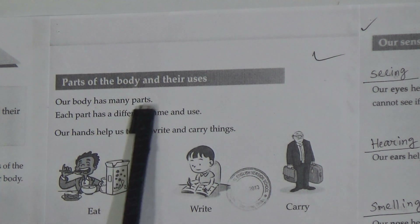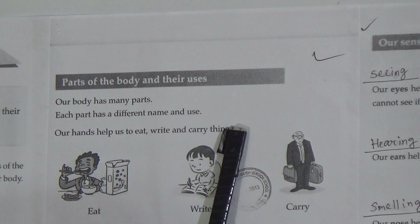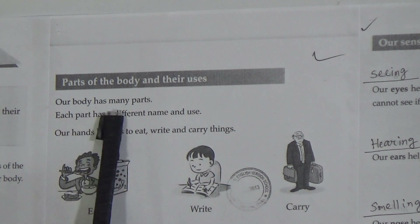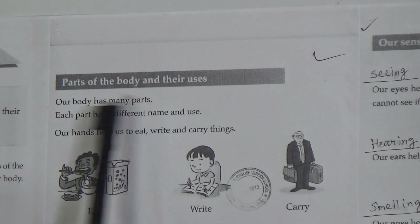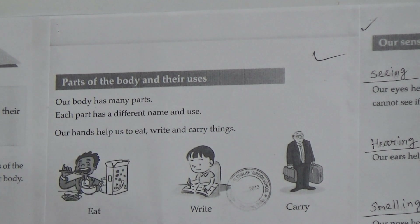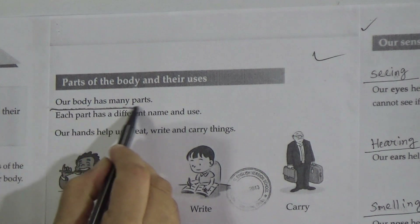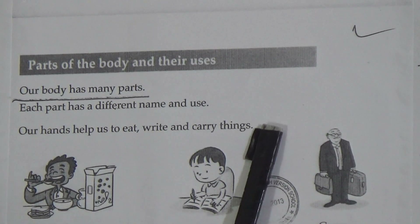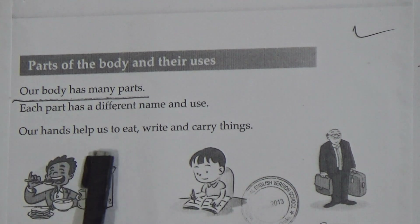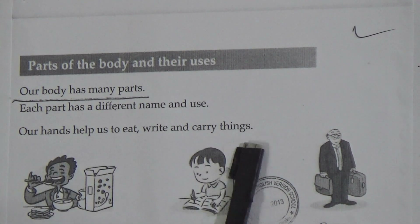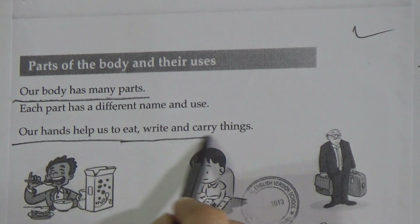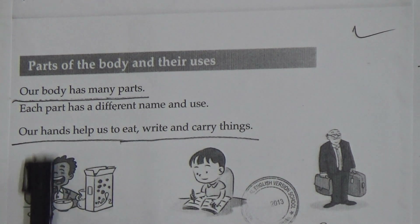Now go to the next page: 'Parts of the Body and Their Uses.' We have learned the names of the different parts of our bodies, and now we will learn their uses. Our body has many parts — underline this line, my dear students. Each part has a different name and use. Our hands help us to eat, write, and carry things — underline this important line.